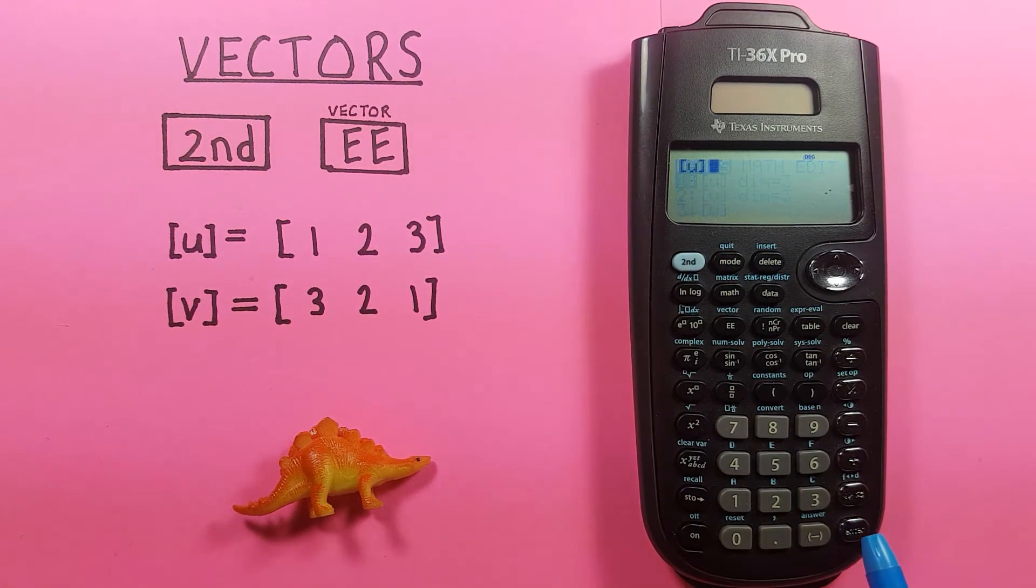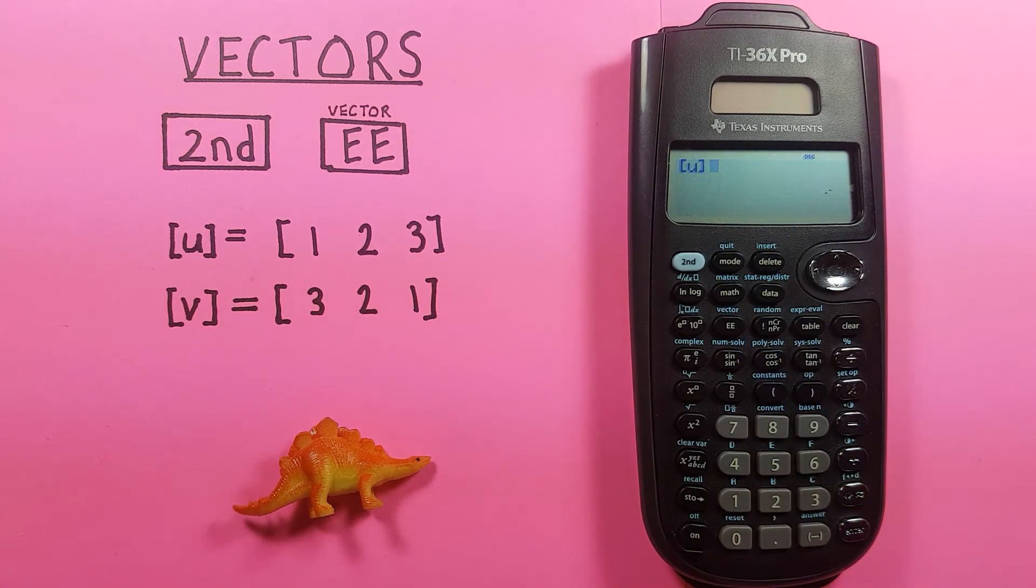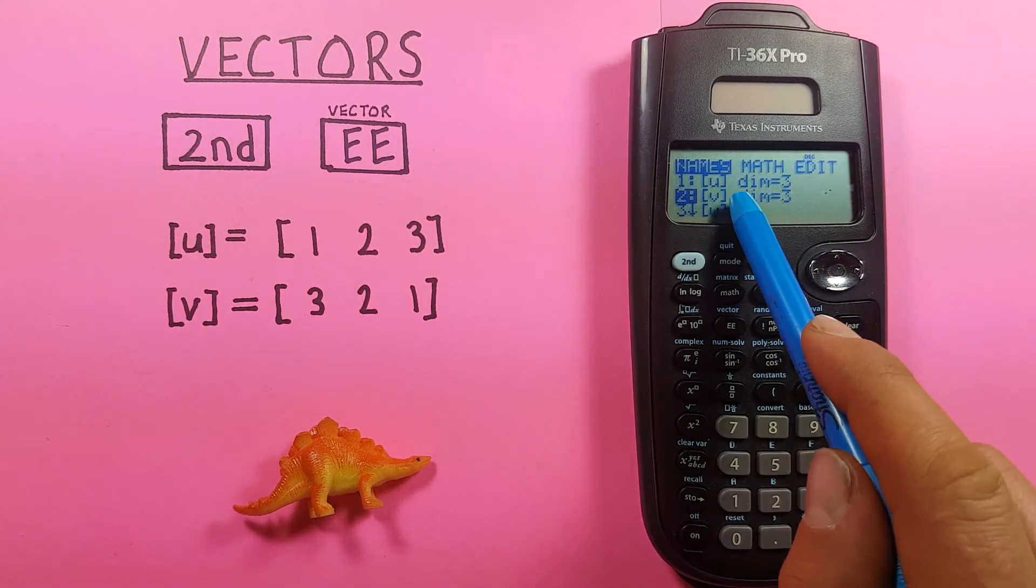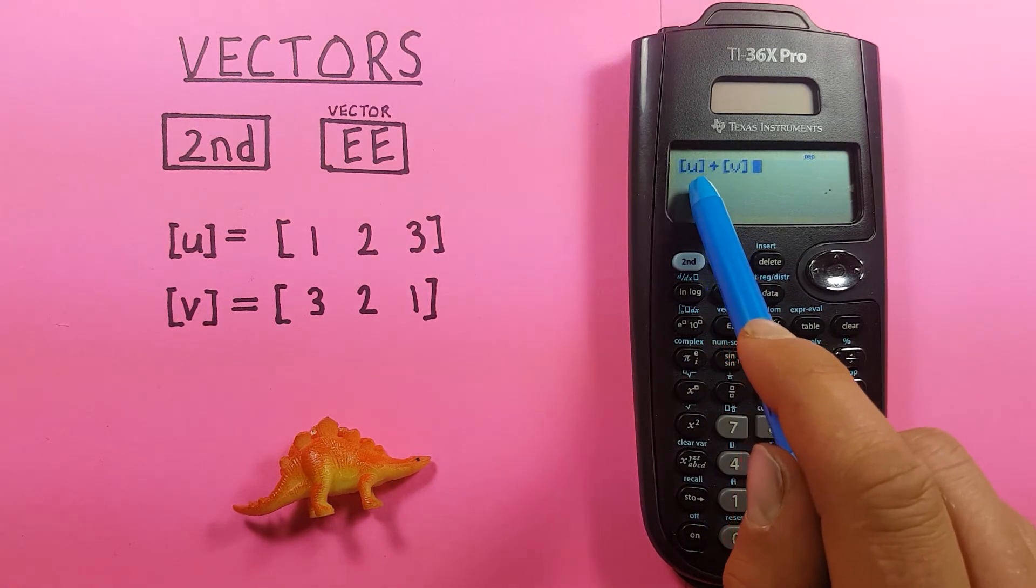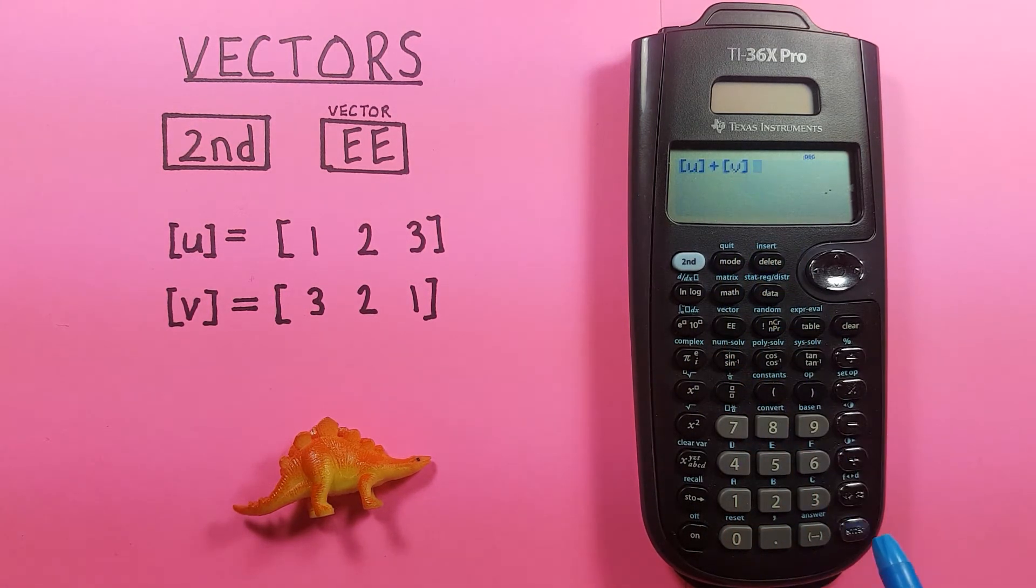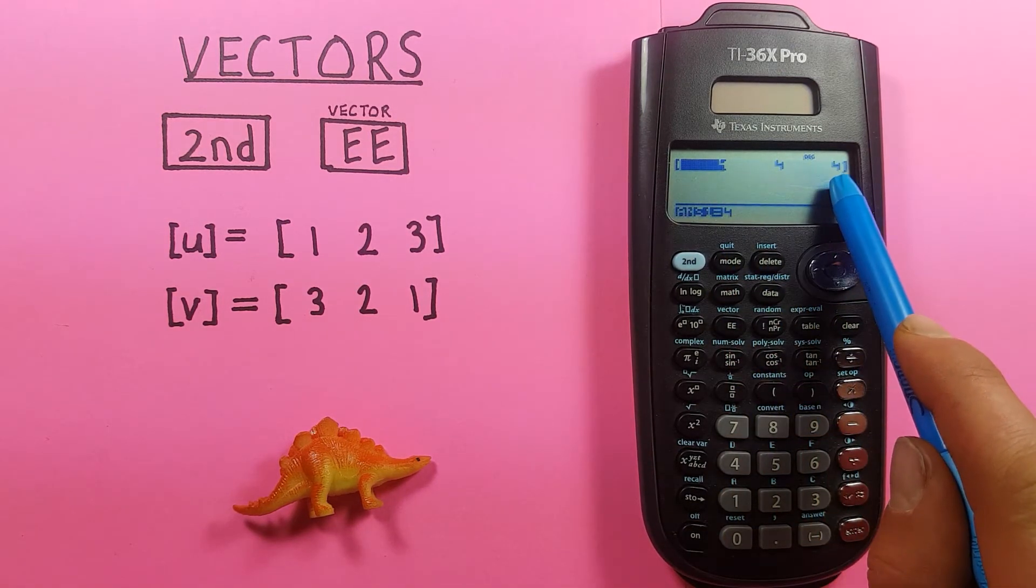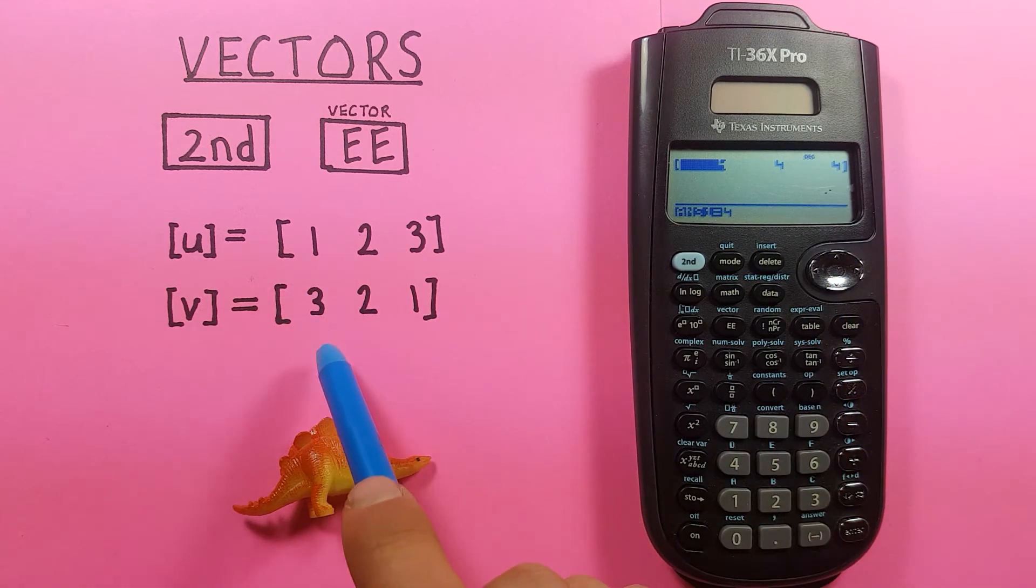Back to the names menu, highlighting our U vector. And we see we have a U there now. If we press plus, second EE, go down, highlight our V vector, and press enter. We can now see we have U plus V. If we press enter, we see we've added our two vectors to get 4, 4, 4, which does make sense if you look at our original vectors.